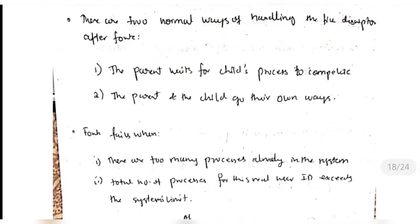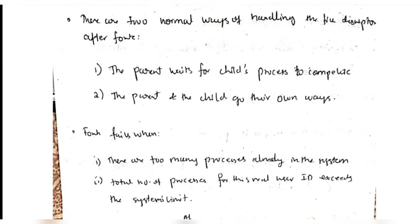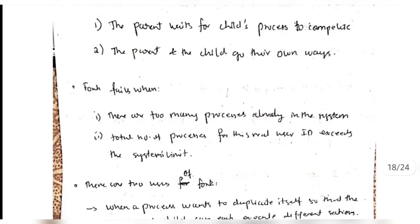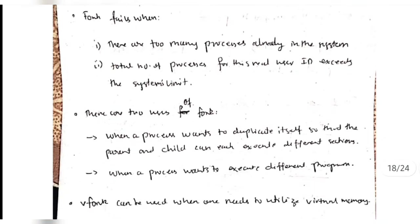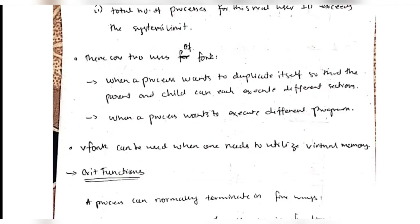There are two ways of handling file descriptors after a fork: either the parent waits for the child process to complete, or they move in different ways - the parent performs its own functions and the child performs its own. If the fork fails, the two reasons are that there might be too many processes or too many process IDs. The two uses of fork are: when a process wants to duplicate itself so parent and child can execute different sections, and when a process wants to execute a different program. To utilize virtual memory in a fork we can use 'vfork' instead of fork.